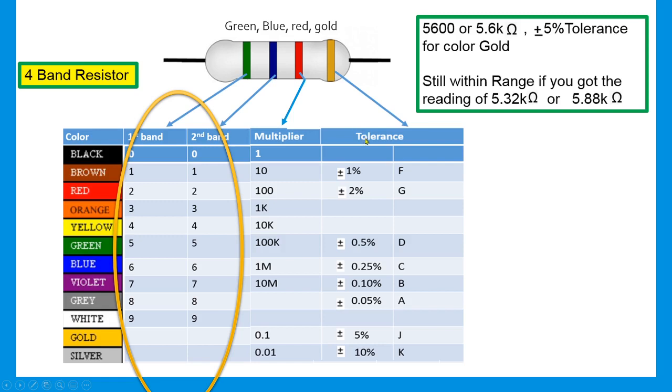And the fourth band is tolerance, which is gold, five percent. Our value is 5,600 or 5.6 kilo ohms.